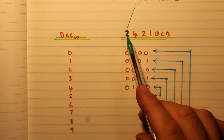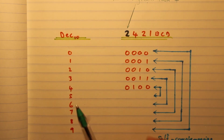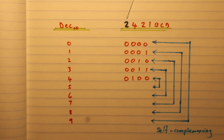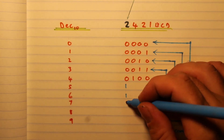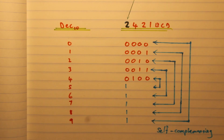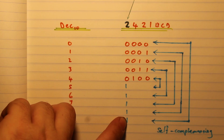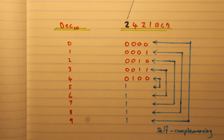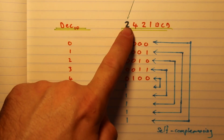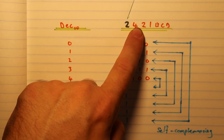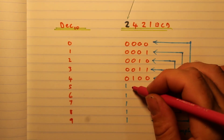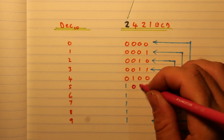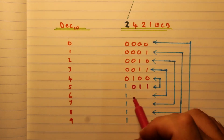Once you go past four, you are constrained to use that second two. To make it easy, for all numbers from five to nine, you put a one in that position first. You've already used that two, so you only have the remaining bits to deal with. For five, you've already used the two, so you use the other two and the one, giving you 0011.